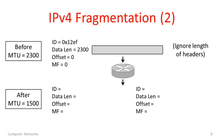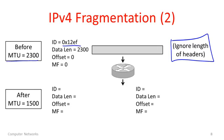Let's go through an example. I have a large packet coming into a router. Let's say the MTU of the incoming link was 2300 bytes. I'll talk about length just in terms of the data. A packet comes in with identifier value 0x12EF, a data length of 2300 bytes, an offset of 0 because it's not fragmented, and the more-fragments bit is cleared. Now for the outgoing link, the MTU is 1500 bytes — it won't fit, so we fragment.